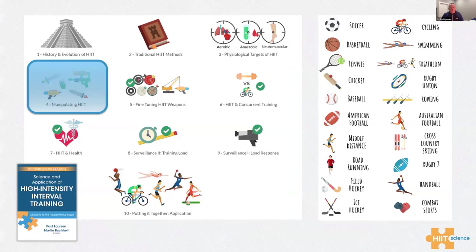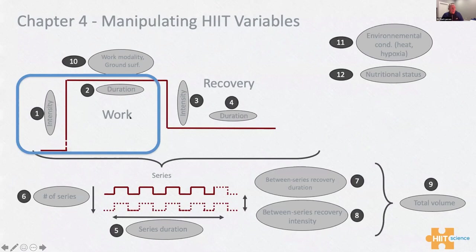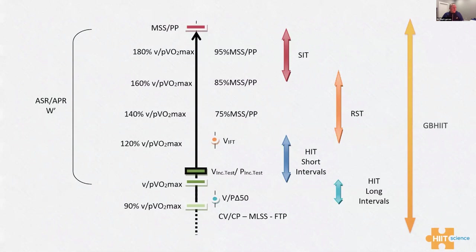Moving into chapter four — HIIT formats — learning how to manipulate these weapons. There are 12 different factors we can manipulate within a given HIIT session to change the physiological output and determine which HIIT type we get. The main ones are the intensity and duration of the work bout, and also the intensity and duration of the recovery bout — those are the key factors.